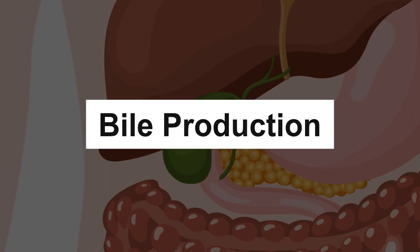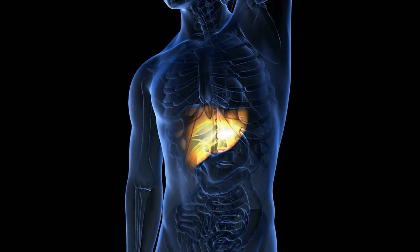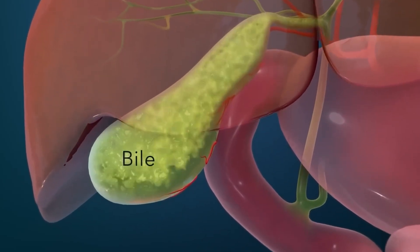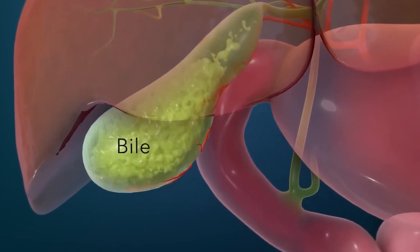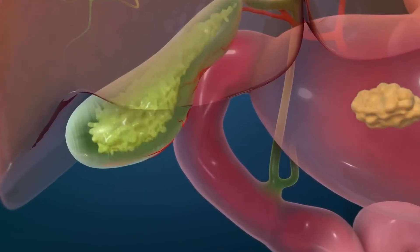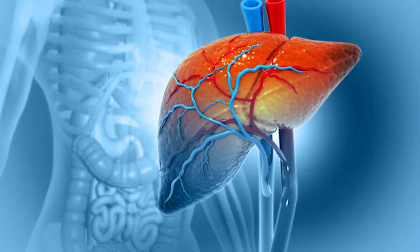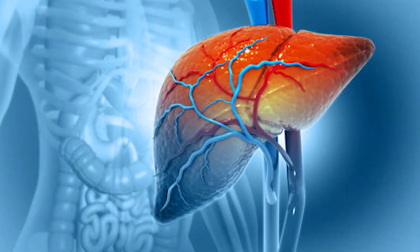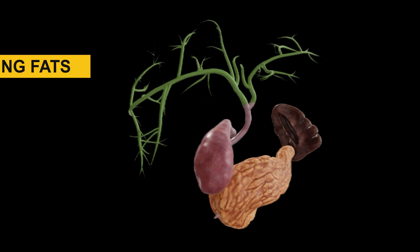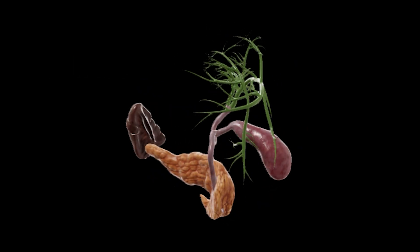Bile production. The liver continuously produces bile, but it is not always needed for digestion. Excess bile is diverted into the gallbladder for storage and concentration. The gallbladder can concentrate bile by absorbing water and electrolytes from it, making the stored bile more potent. Bile composition. Bile is composed of water, bile salts, bilirubin, cholesterol, and electrolytes. Bile salts are the primary component responsible for emulsifying fats, aiding in their digestion. Bilirubin gives bile its characteristic color.